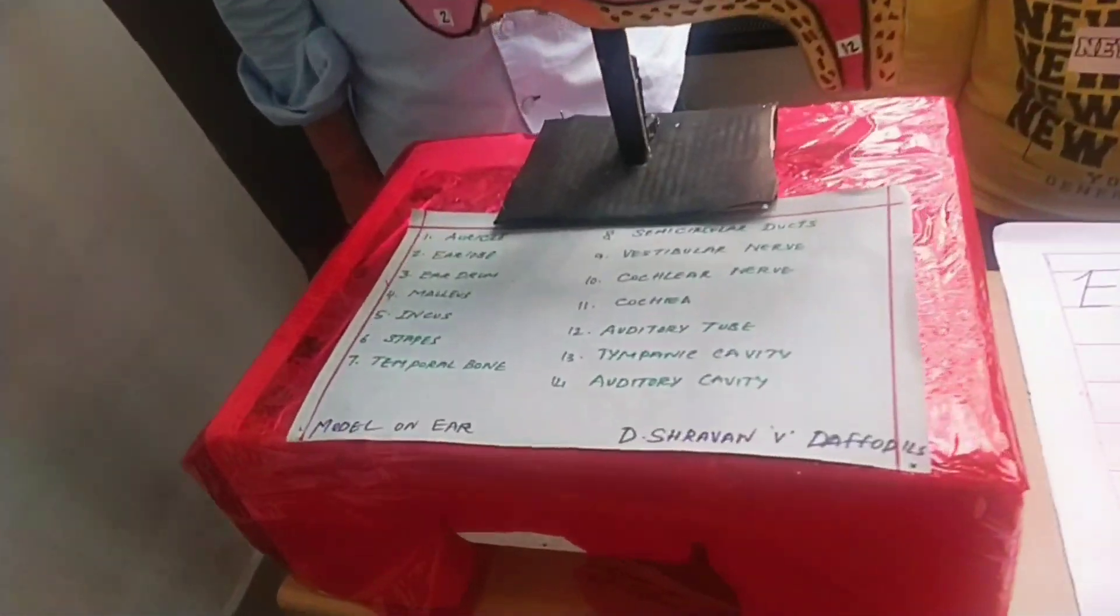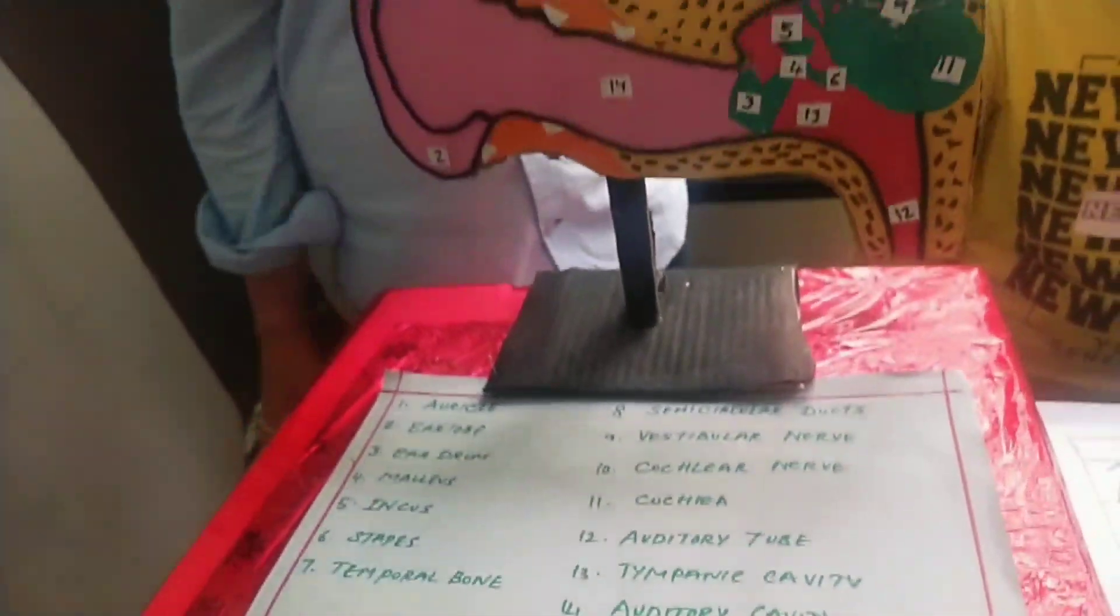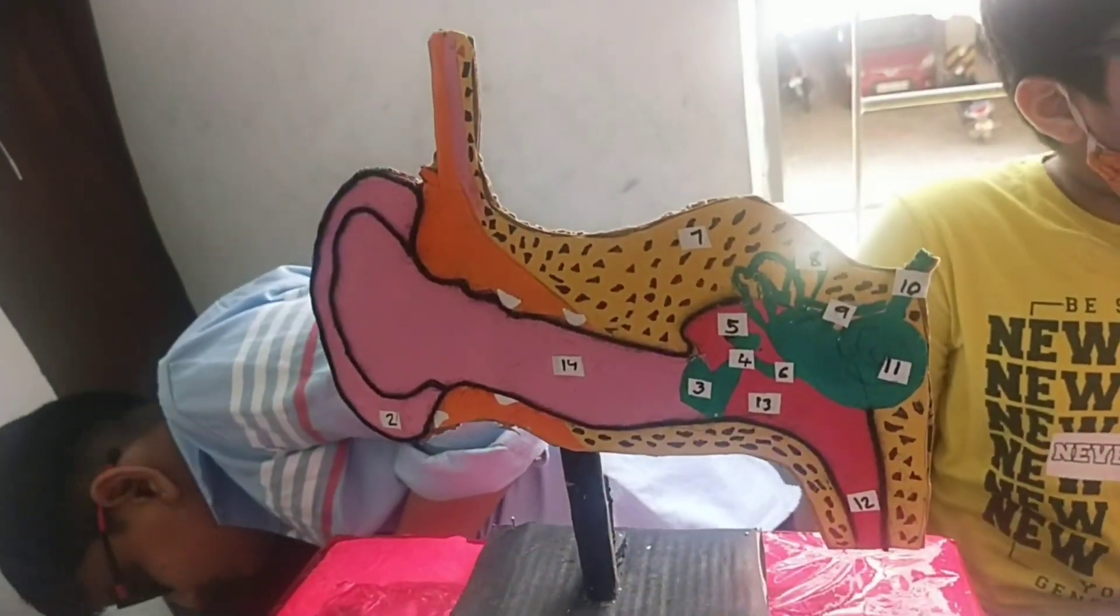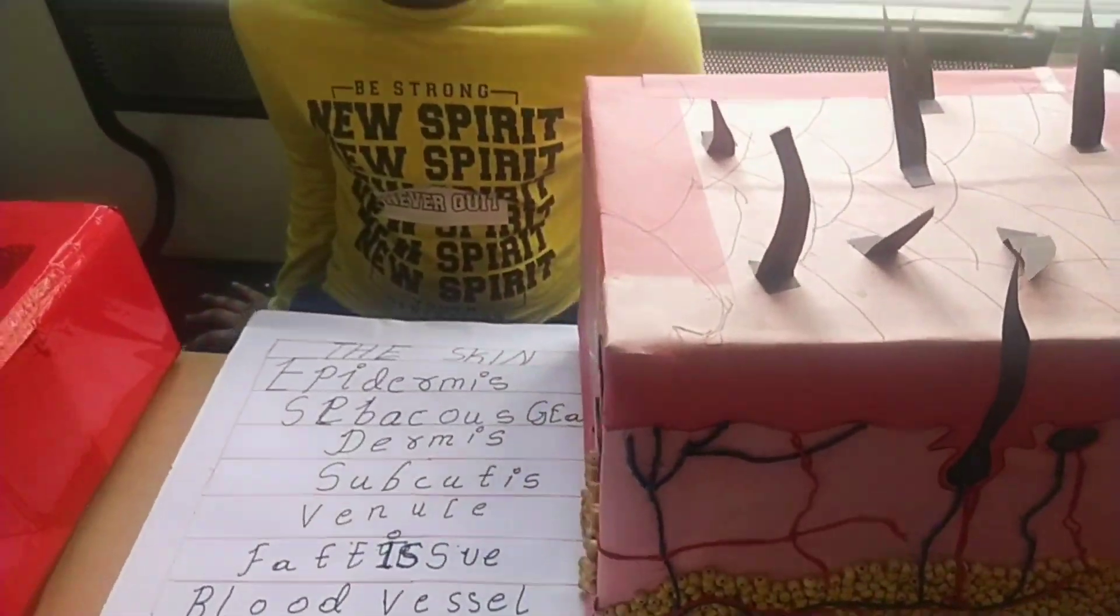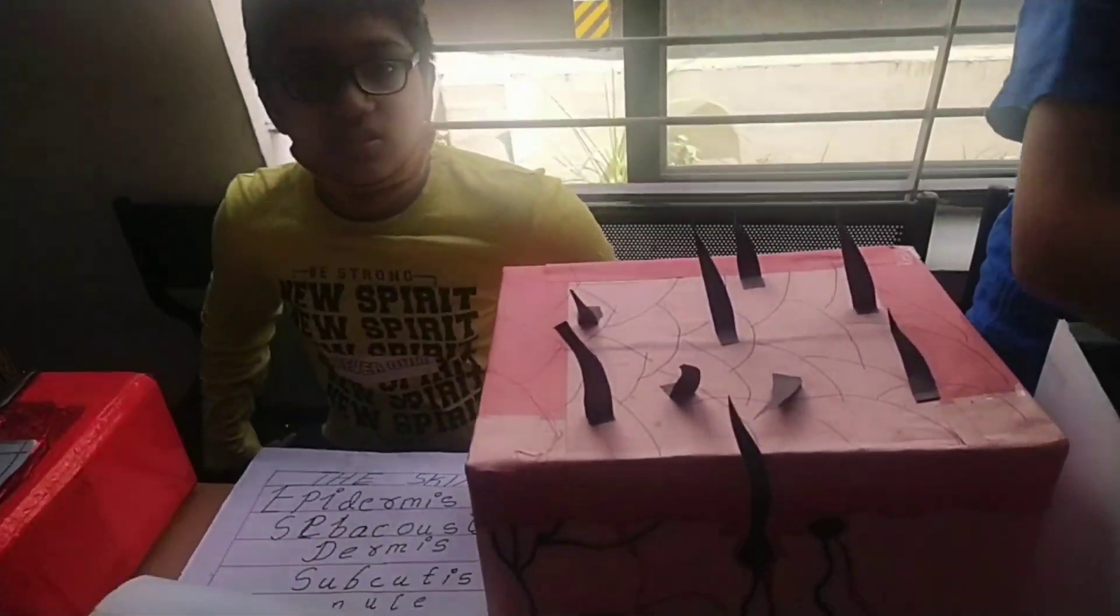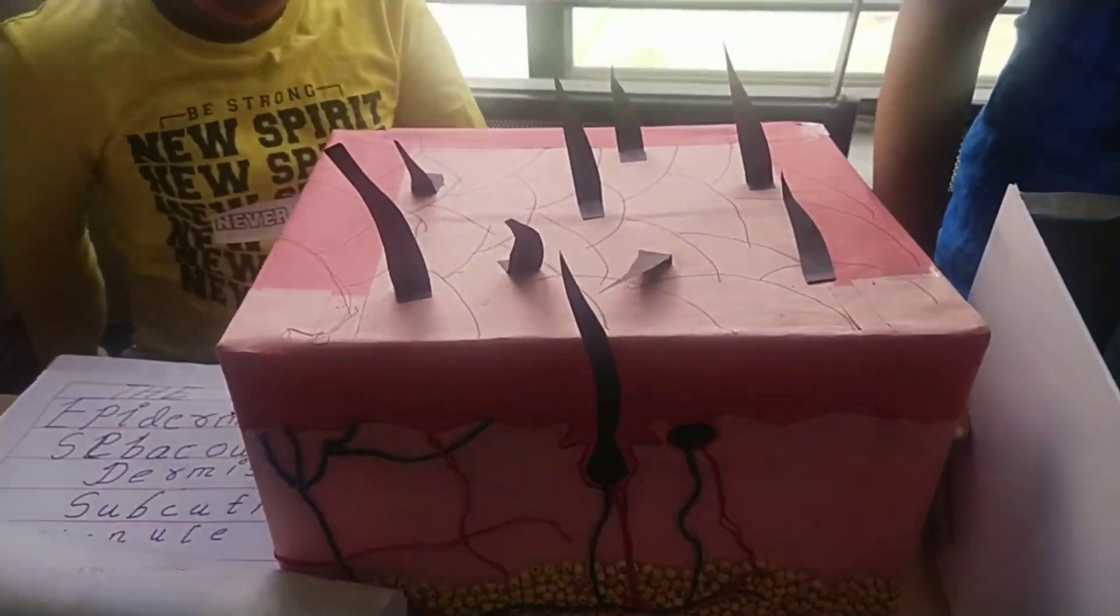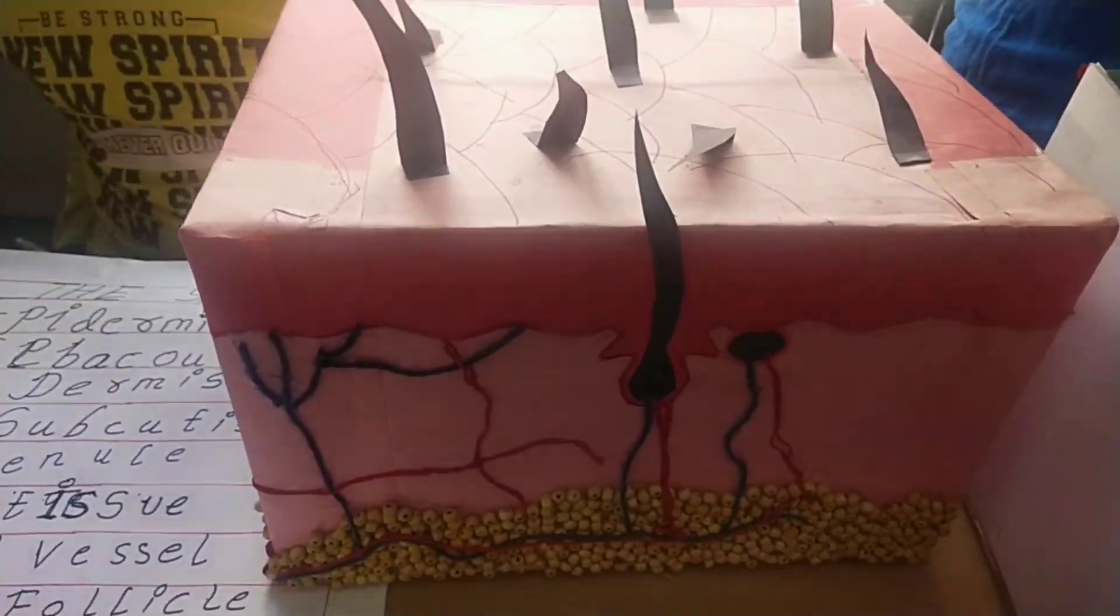Here comes my friend's project. This is an ear structure which consists of outer ear, ear canal, middle ear, inner ear, eardrum, and auditory nerve. Next comes the skin structure showing epidermis, dermis, connective tissue, hair follicles, and sweat glands.